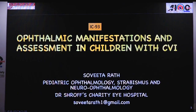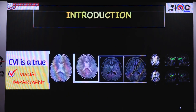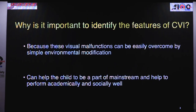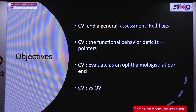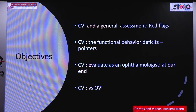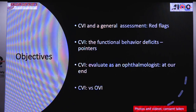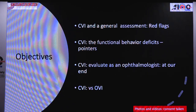Good morning everybody — thank you for this opportunity. After that beautiful presentation on what and where, let's see the ophthalmic manifestations and assessment in children with CVI. CVI is a true visual impairment which includes both cortical and subcortical levels of the brain. These visual malfunctions can be easily overcome by simple environmental measures, helping the child to be part of mainstream education and perform academically and socially well.